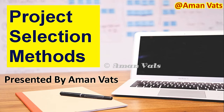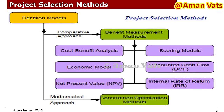When we talk about project selection methods, generally there are two different models: one is comparative approach and another one is mathematical approach, which is more accurate. The comparative word itself suggests comparison — once you have two or more projects in hand and you want to select one, you can adopt comparative approach or mathematical approach.